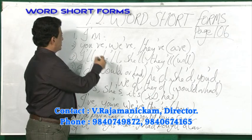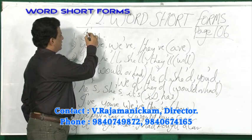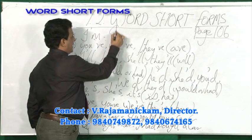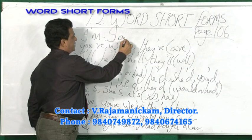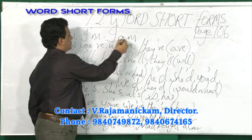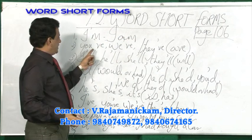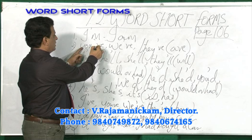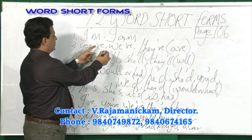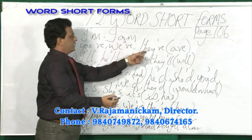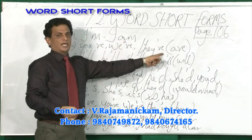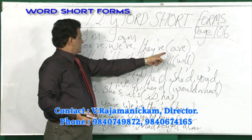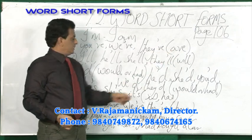Here, my dear students: I apostrophe M — what do you mean by that? I am. So it is shortened into I'm. You're means you are, we're means we are, they're means they are.